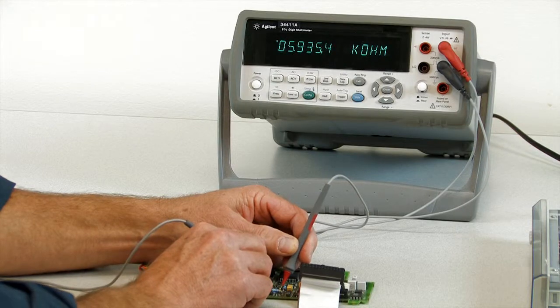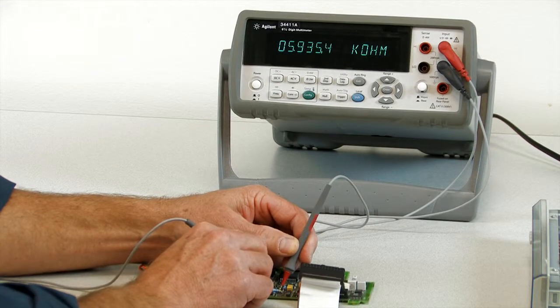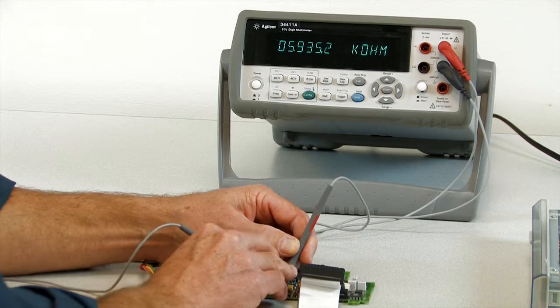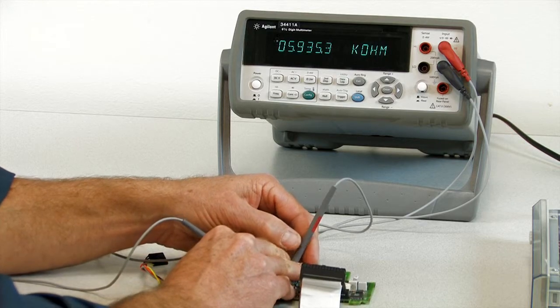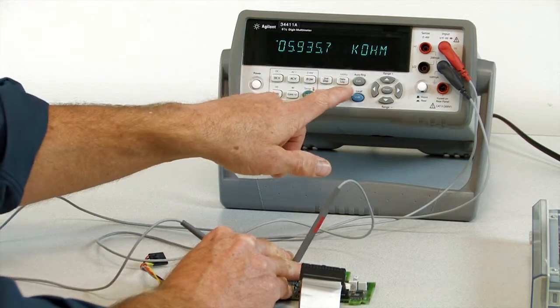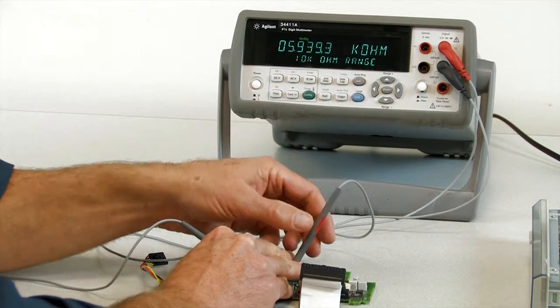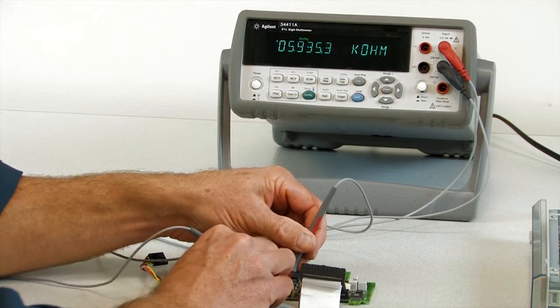Let's move on to resistance. This DMM will auto range very quickly. But if you know you're going to be probing the same resistance or similar resistance, you can also go ahead and put it into a manual range, and it'll just measure that much quicker.